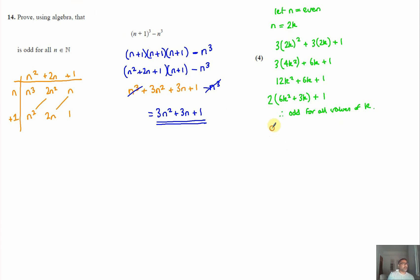So if I do the same thing now, but I let n equal an odd number, therefore n will be, I'm going to say, 2k - 1. You can use 2k + 1. Minus 1 tends to neaten your answers up, I find, a little bit more. So if I put that into my brackets now, that's going to give me 3(2k - 1)² plus 3(2k - 1) plus 1.